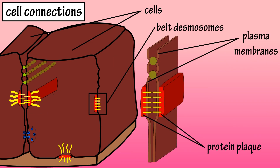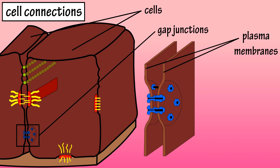Belt desmosomes are also centered around a protein plaque on the inside of the plasma membrane. From this plaque, proteins extend out and anchor to one another, like in spot desmosomes. Gap junctions are channels that form when the plasma membranes of adjacent cells connect. Membrane proteins form fluid-filled tunnels called connexons that allow certain substances and impulses to pass from one cell to another.